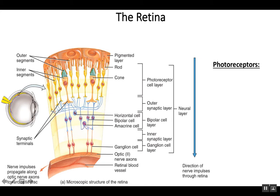The retina has a number of different neurons, most importantly the photoreceptor layer, which consists of neurons known as rods and cones.